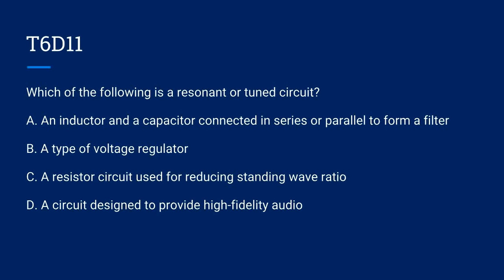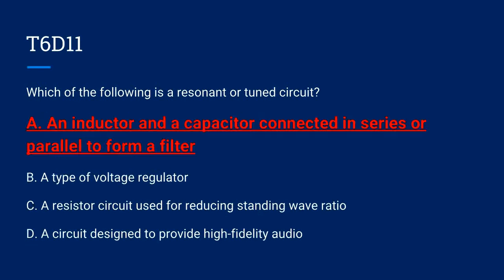T6D11. Which of the following is a resonant or tuned circuit? A. An inductor and a capacitor connected in series or parallel to form a filter. B. A type of voltage regulator. C. A resistor circuit used for reducing standing wave ratio. Or D. A circuit designed to provide high fidelity audio. The correct answer is A. An inductor and a capacitor connected in series or parallel to form a filter.